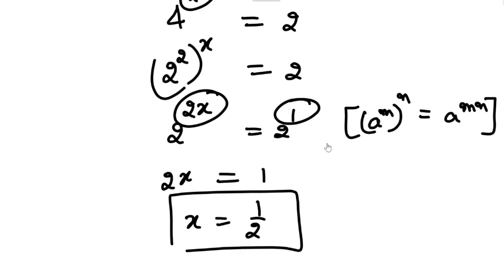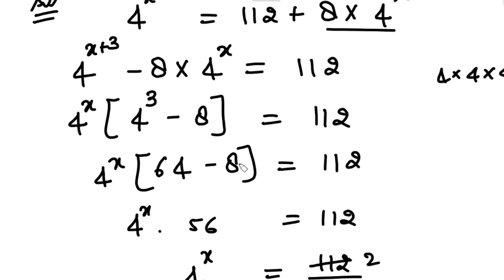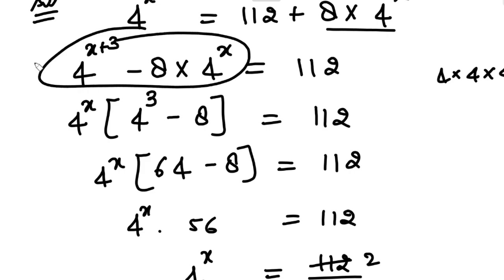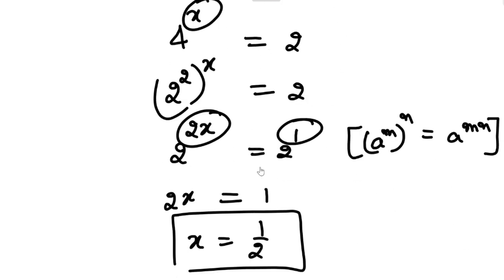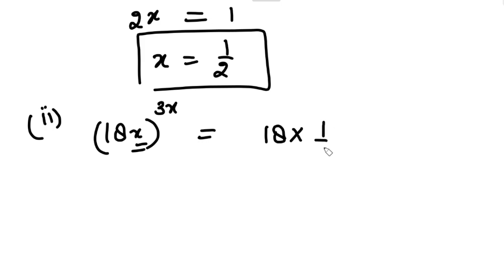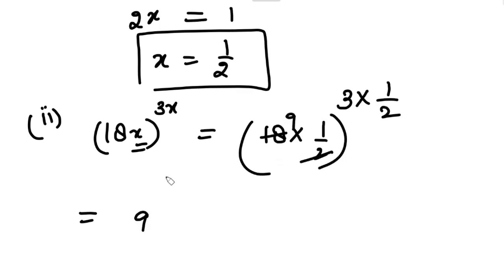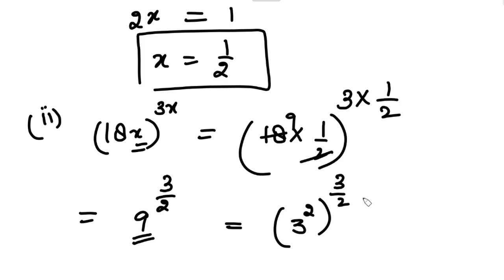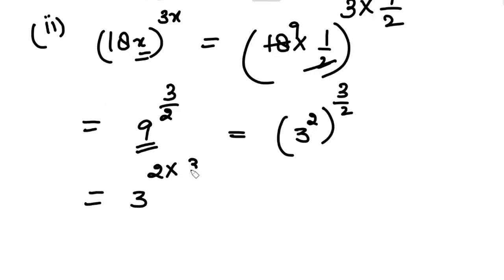Now substituting X equals 1/2 to find the required value: 18X raised to the power 3X equals 18 times (1/2) raised to the power (3 times 1/2) equals 9 raised to the power 3/2. Writing 9 as 3 raised to the power 2, the whole power 3/2 stays; by the power law, powers multiply to give 3 raised to the power 3, which equals 27.